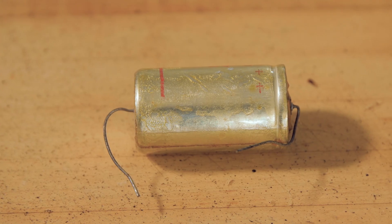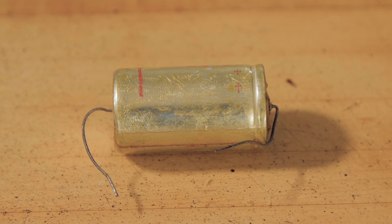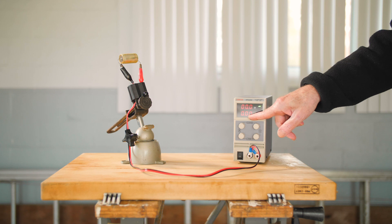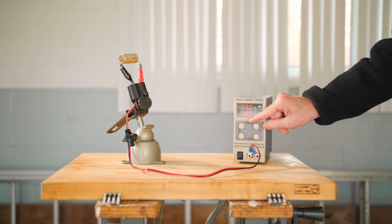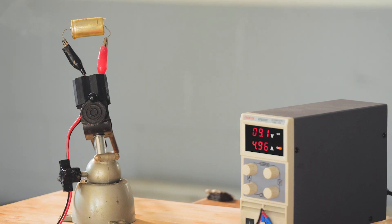Our first capacitor is of the wound gel electrolyte type. It's rated for 25 volts in the right direction but we're going to apply DC voltage in the wrong direction. Our DC supply displays both voltage and current. We'll slowly increase the DC voltage in the wrong direction.